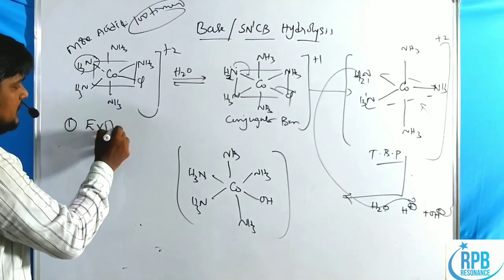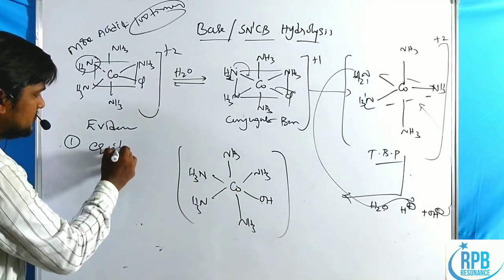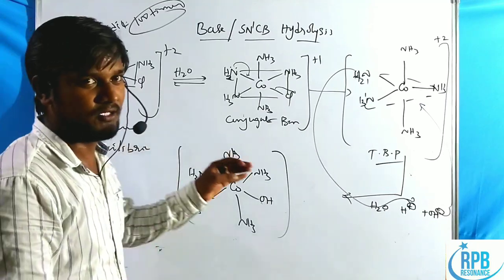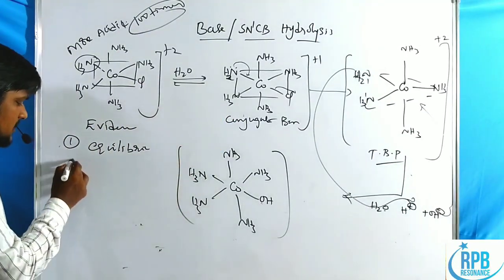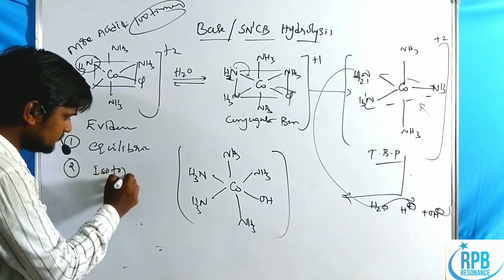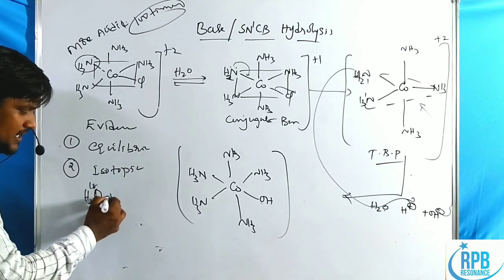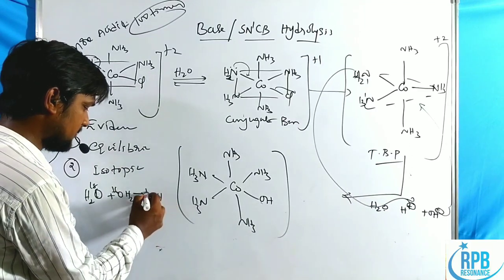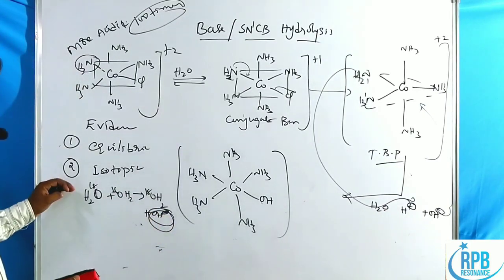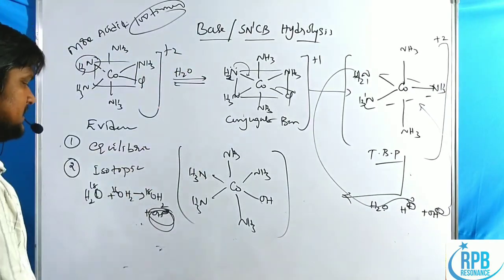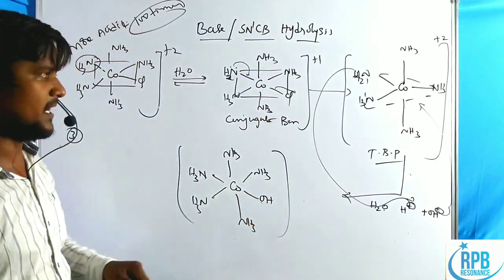Now let us discuss the kinetic evidence for conjugate base mechanism. First point: the proton exchange between water and ammonia is an equilibrium, meaning no leaving group elimination occurs in the first step. This confirms SN1-based conjugate base mechanism. Second, the isotopic effect — using heavy water (D2O) instead of normal water — also provides evidence for the SN1CB mechanism.